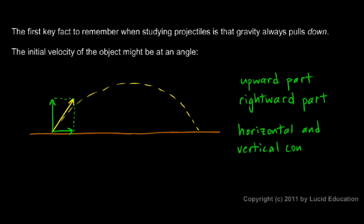That's a good term to know. Those little vectors that I drew in green are the horizontal and vertical components of the initial velocity vector.